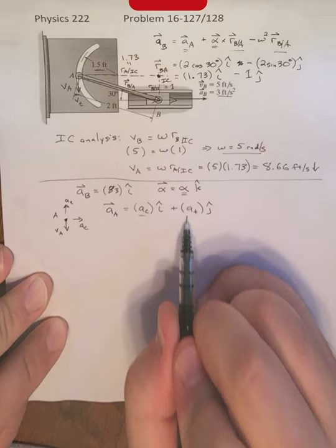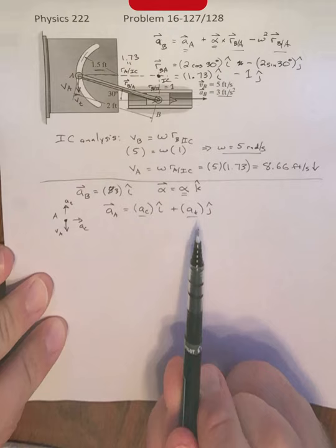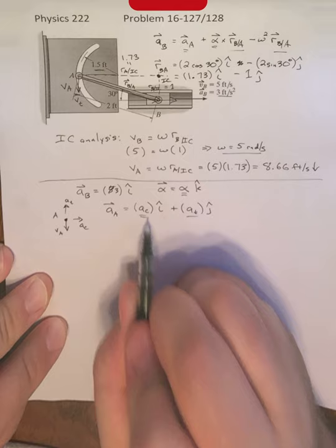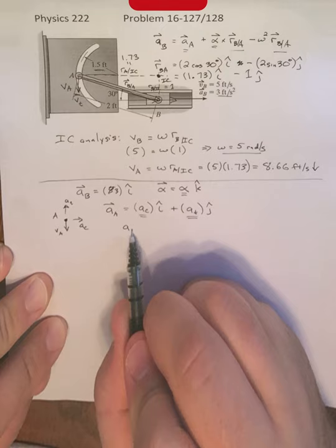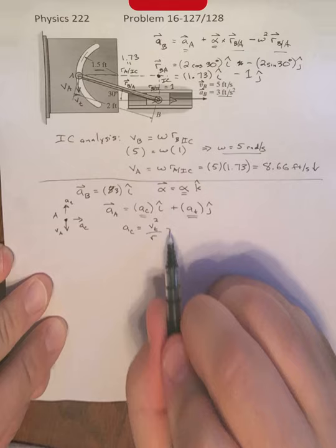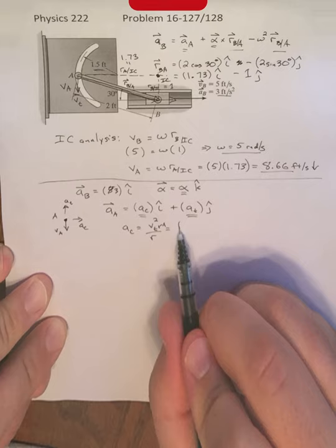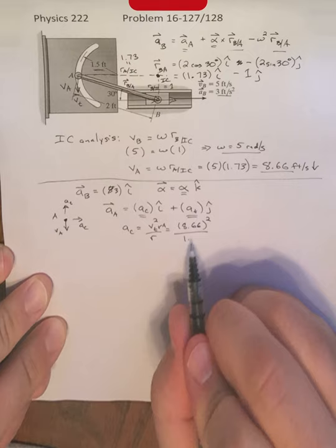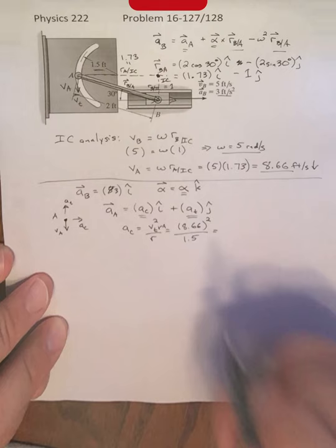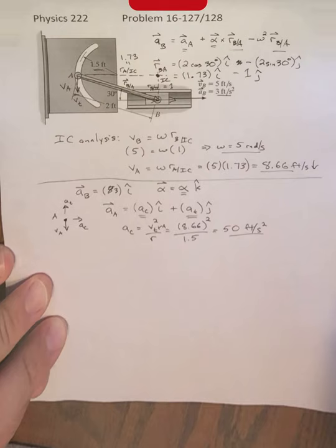Now, we've just added another unknown, it seems, because we would have the two components of A sub a, as well as alpha. However, the centripetal acceleration is a quantity that we already know. We know from physics that this is equal to Vt squared divided by R, and we know what this Vt is, this is the same thing as Va, this 8.66 feet per second squared divided by this radius of 1.5 gives me an Ac of 50 feet per second squared. So we already know that number.